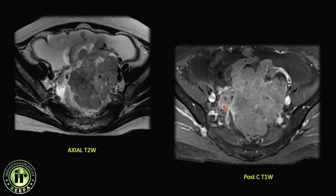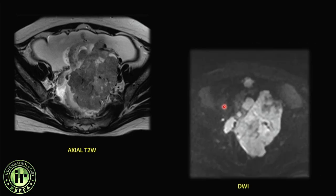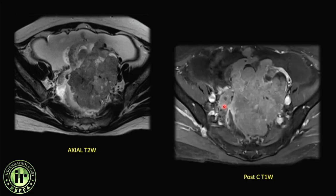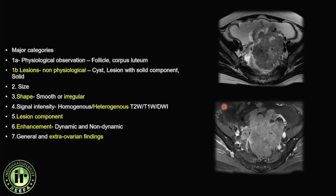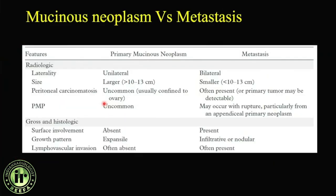The final case shows all malignant features fitting ORADS 5: diffusion restriction on high b-value DWI, non-physiological solid lesion, heterogeneous enhancement, high-rate contrast pickup, and peritoneal thickening. Although ORADS does not specify particular ADC values, the protocol recommends diffusion with a higher b-value. This becomes ORADS 5.